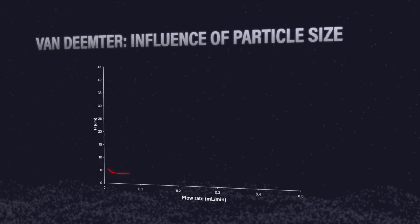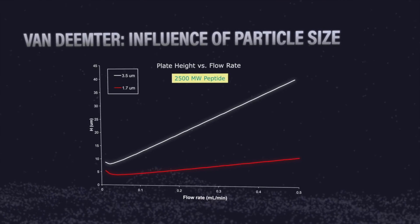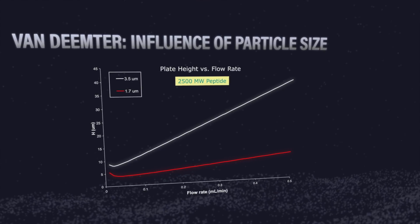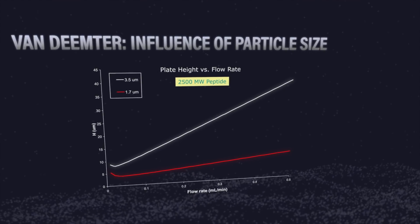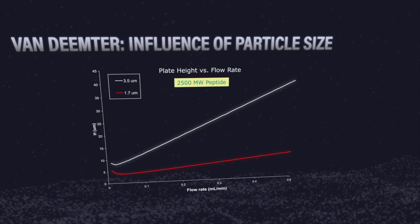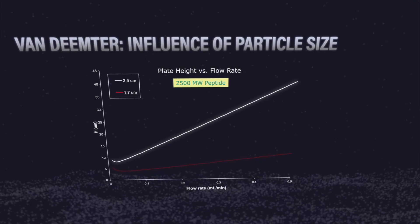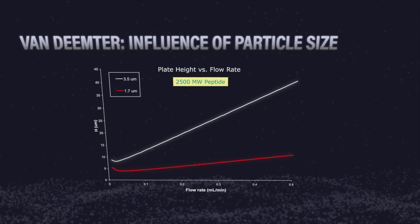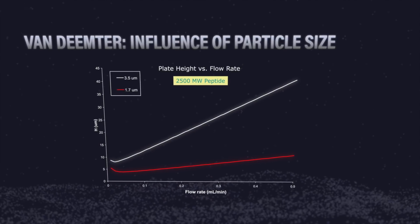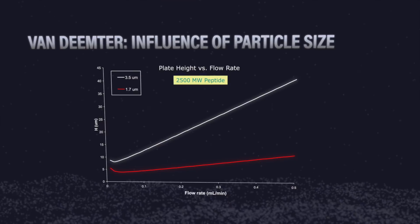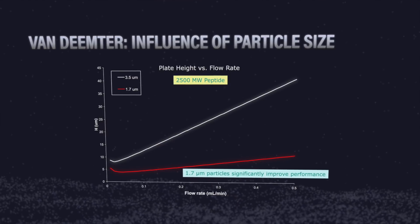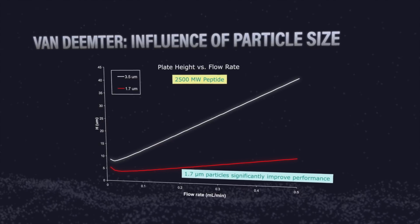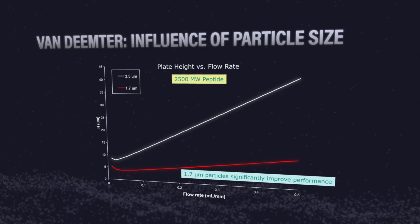We were also able to look at the difference in particle size specifically for one peptide. We made a van Deemter curve to look at the difference of a 2,500 molecular weight peptide on 3.5 micron particles versus 1.7 micron particles. It's pretty clear from these curves that with the 1.7 micron particle, you can get much better performance not only in efficiency, but it also gives you a wider range of flow rates from which to choose to get that improved efficiency.